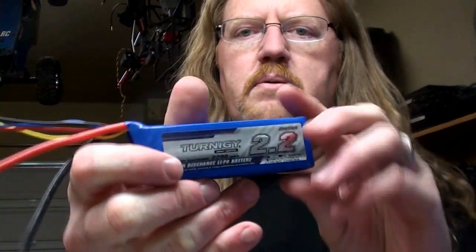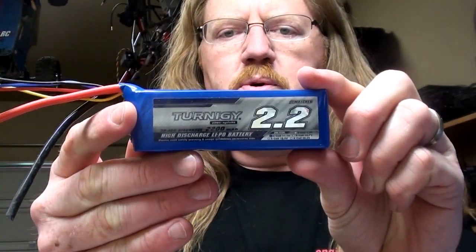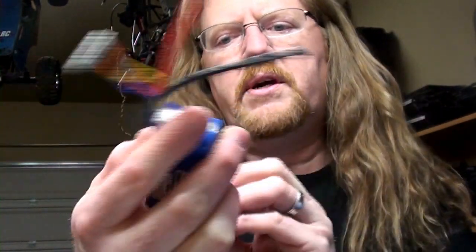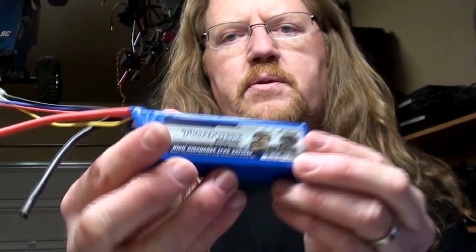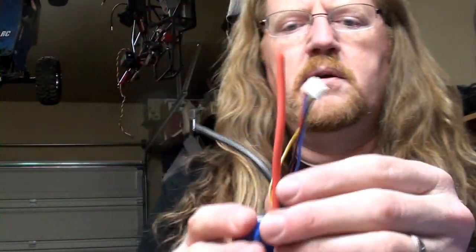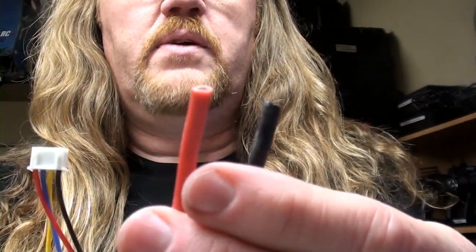This is a Turner G 2200 3S 30 to 40C discharge battery. It came with some funky connector that I don't use and I'm going to put Dean's connectors on it.